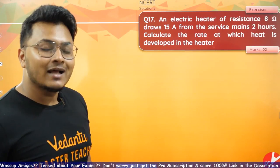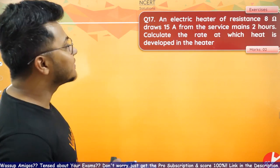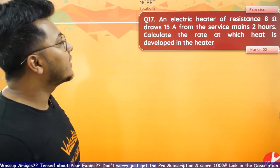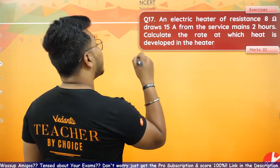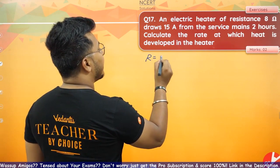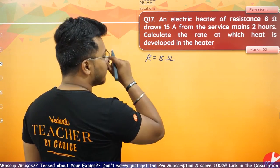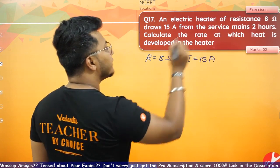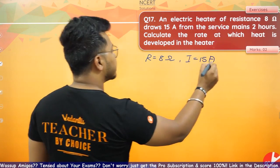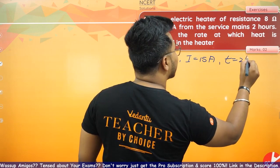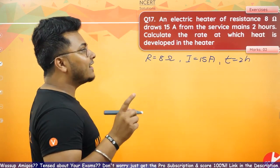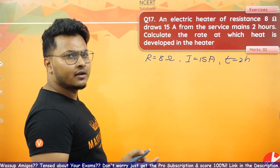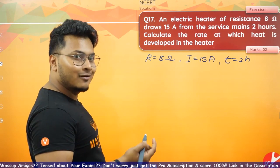Question number 17 — the last question. It's interesting and easy, worth 2 marks. An electric heater of resistance 8 ohms draws 15 amperes of current from the service mains for 2 hours. Calculate the rate at which heat is developed in the heater. Rate means power.